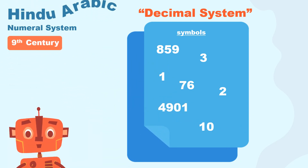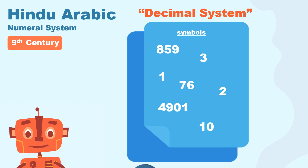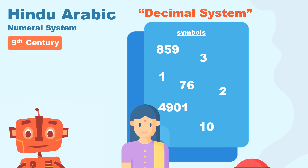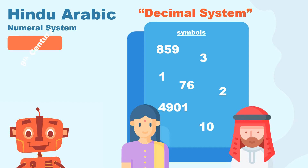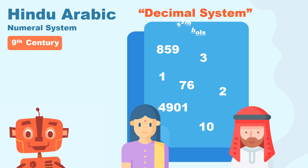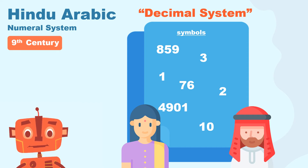The Hindu-Arabic numeral system evolved over time, with origins in India, and was adopted in the Arabic culture around the 9th century. Does this numeral system and its symbols look familiar to you? Hopefully you said yes — this is the numeral system we use widely today and is generally referred to as the decimal system.